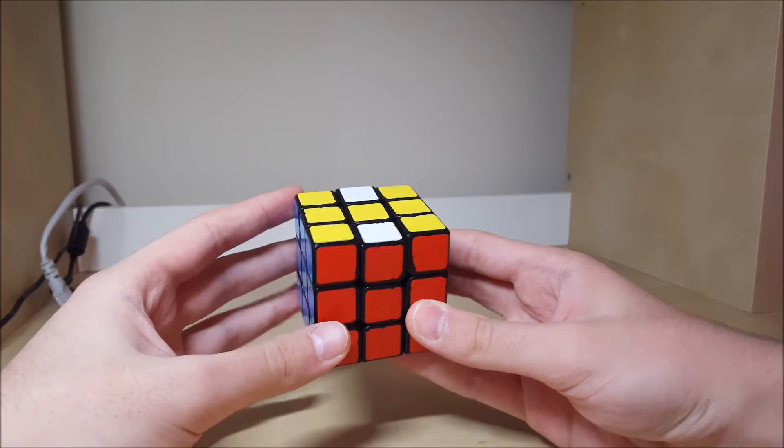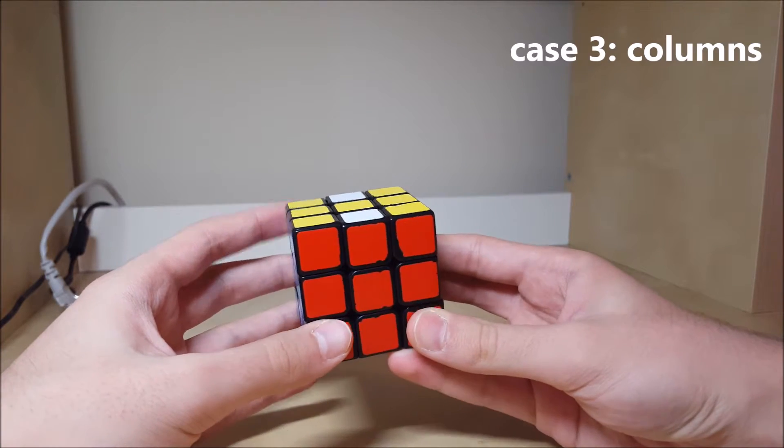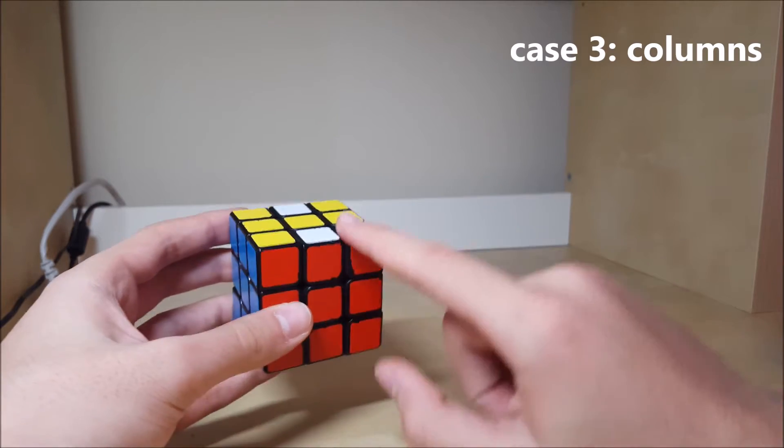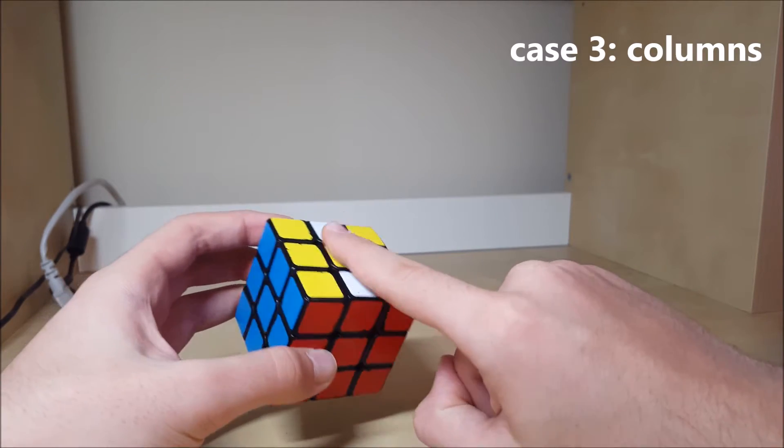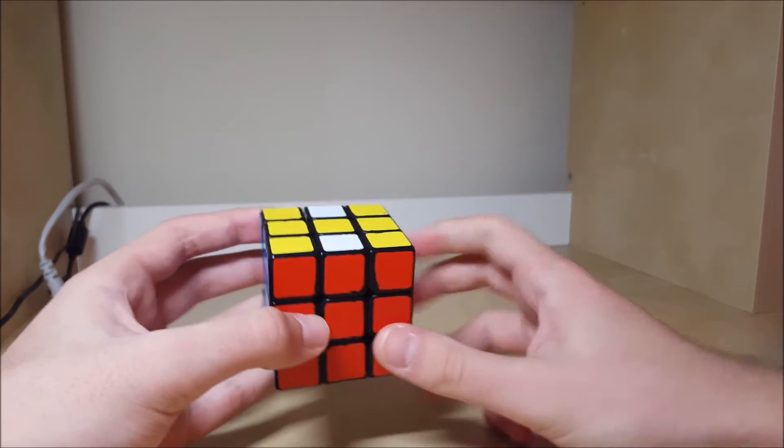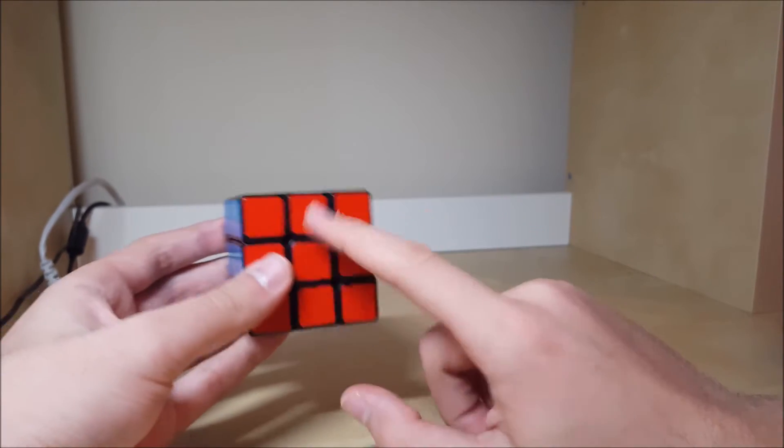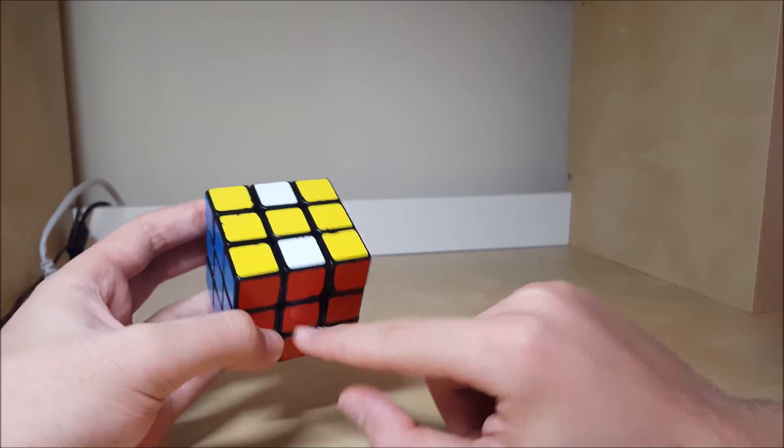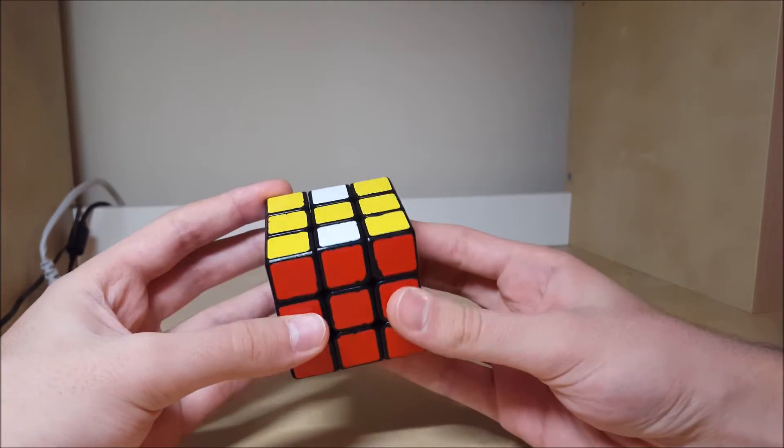The third case I'm going to be calling columns. In the columns case, it's similar to bars, but on bars the matching colors are on top and the opposites are on front. In columns, you have these vertical columns, so they're matching here and then opposite here, and you solve it like this: